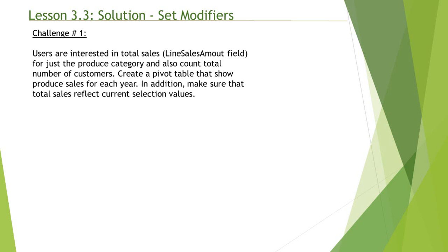We'll begin with the set identifier. The challenge states at the very bottom that total sales should reflect current selection values, meaning you should allow users to make selections and the total sales should reflect those selections. So in this case, the requirement is to use the default or dollar identifier. As discussed in the prior lesson, dollar is the default state — the state in which the QlikView document operates — so by default, user selections get reflected in the aggregation.